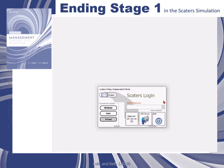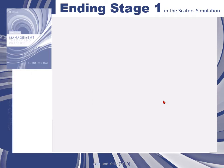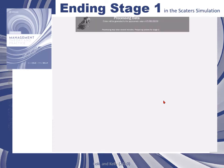It takes a minute or two. The login form will disappear and a data processing form will appear at the top where the SCATERS clock used to be. The system must now generate one year's worth of orders and this takes a few minutes.